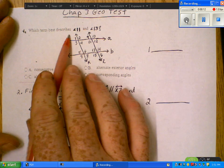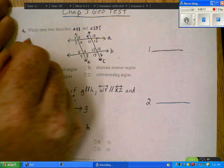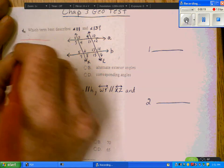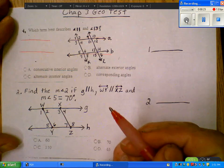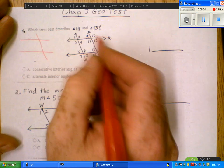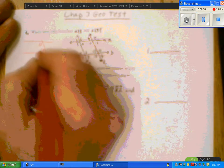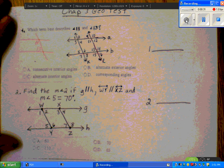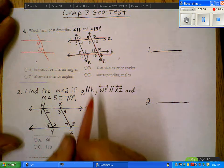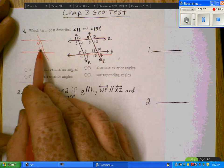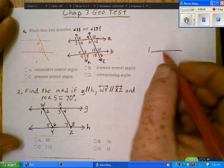Number 1, which term best describes 11 and 13? I split off these two lines. This is my transversal. One is here, 13 is here. Interior angles, all on the same side. So we're going to choose interior angles.